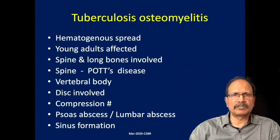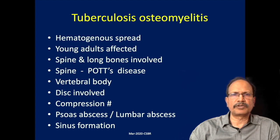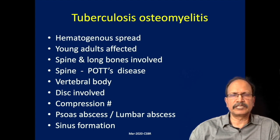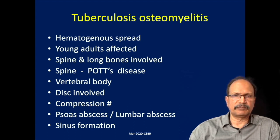If the spine is involved, there may be compression fracture of the vertebra, which may be associated with the later development of paraplegia if not tackled properly. This is known as Pott's disease. The vertebral body may be collapsed, or the disc may be involved and eroded by this inflammation. The infection may spread from one vertebra to another.